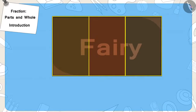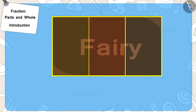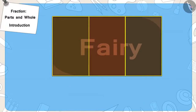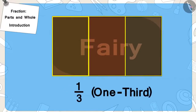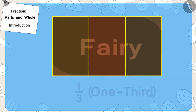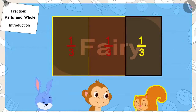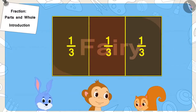We can write it as a fraction in this way. We also call this one third of the whole chocolate. In this way, all three will get one third of the chocolate.